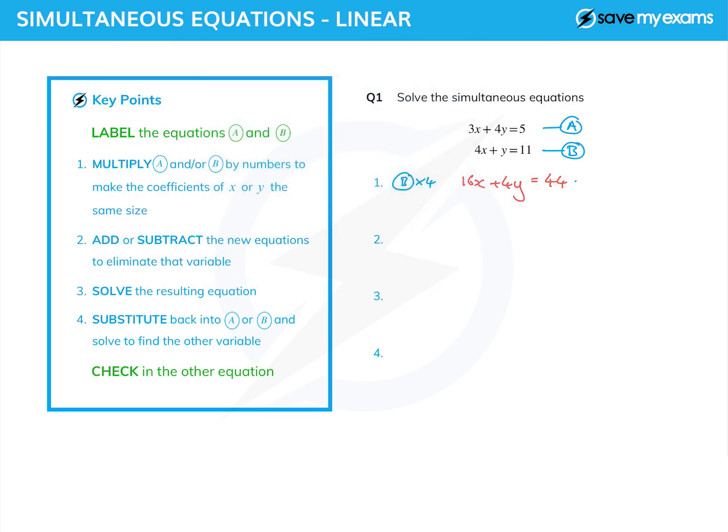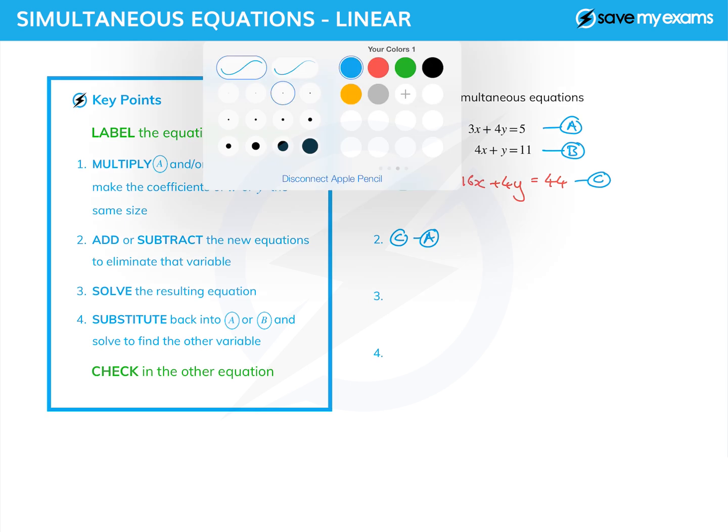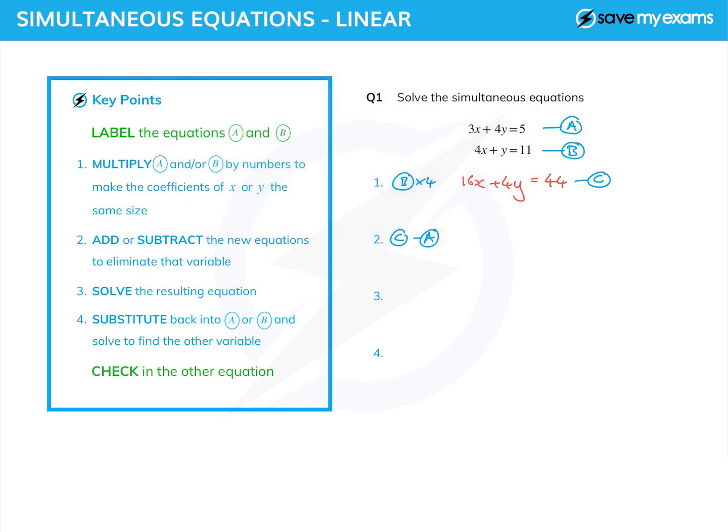And I can now, if I give that a name so I can refer to it, call that C, I can now eliminate the y's by subtracting, because 4y minus 4y is 0. Okay, so I'm going to subtract equation A from equation C. So I'm going to do C minus A. Why have I done it that way around? Because I have more x's in C than in A, and I like to keep things positive. So here we go. 16x minus 3x is 13x. 4y minus 4y is 0. That's rather the point. And 44 minus 5 is 39.